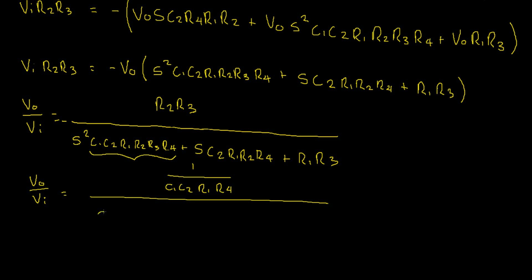Now, the coefficient on our S squared simply becomes 1, so we're left with S squared plus our S term, C2 R1 R2 R4. And we'd be left with 1 divided by C1 C2 R1 R3 times S, plus our last term. The R1 R3 would cancel, and we'd be left with 1 divided by C1 C2 R2 R4.